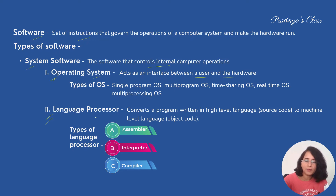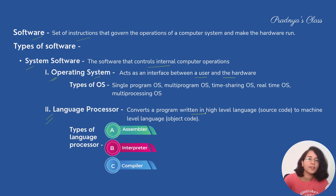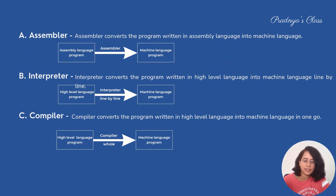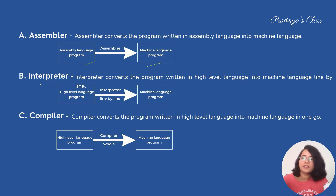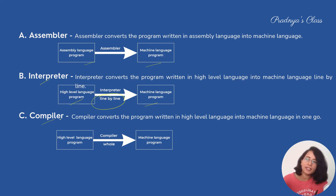The next system software is the language processor. As a computer understands only binary language, we need to convert high-level or assembly language into binary. Language processors do this conversion. There are three types: Assembler, which converts assembly language to machine code; Interpreter, which converts high-level language to machine language line by line; and Compiler, which converts a high-level program to machine language for the whole program at a time.